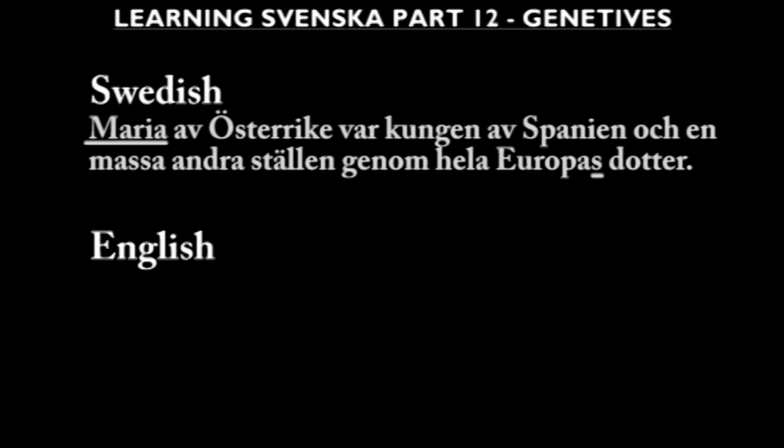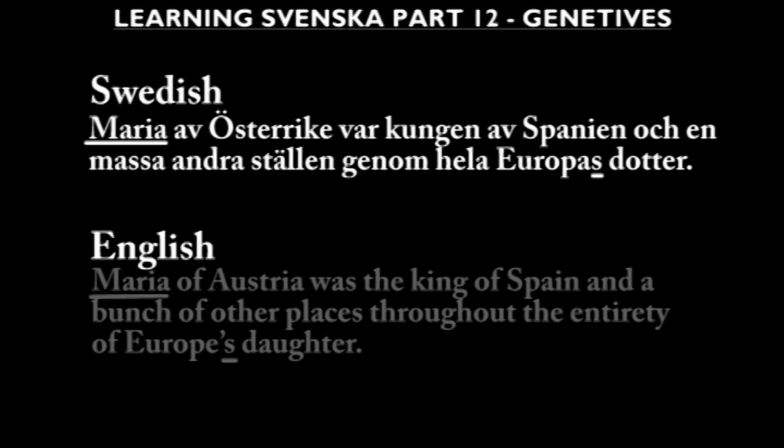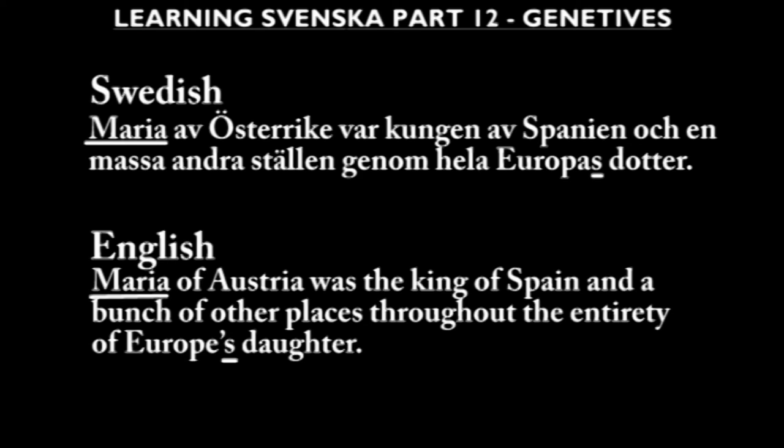As in English, it's possible to convolute meanings so as to move the genitive S far from the headword. For example, the sentence: 'Maria av Österrike var kungen av Spanien och en massa andra ställen genom hela Europas dotter.' Which means: 'Maria of Austria was the king of Spain and a bunch of other places throughout the entirety of Europe's daughter.'